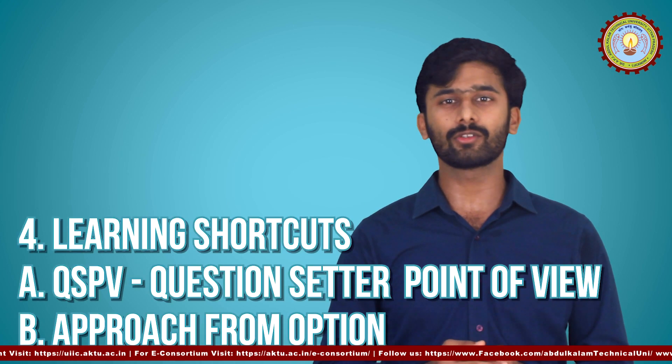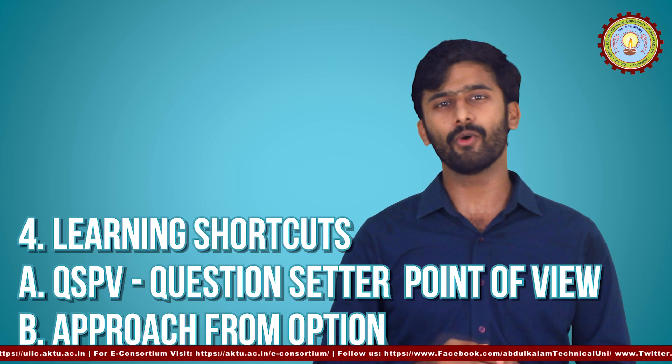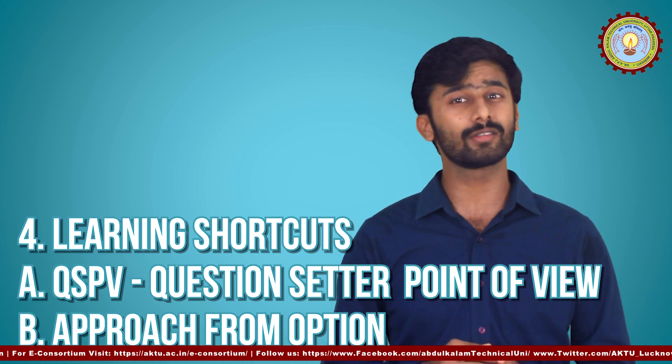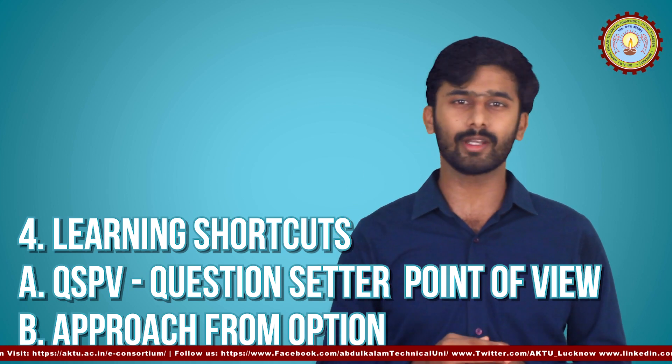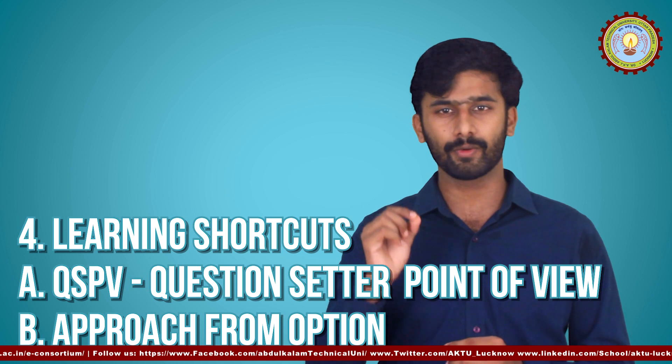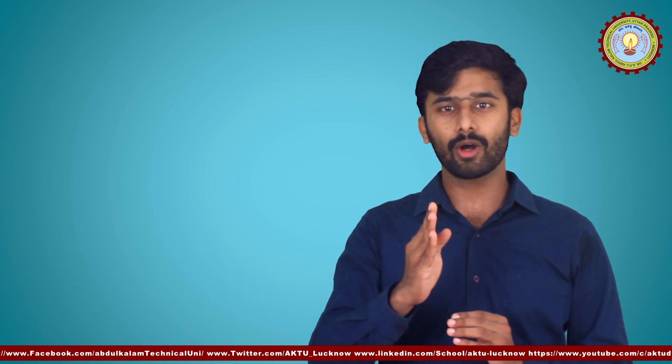The fourth one is learning shortcuts. Before this, you have to know about QSPV — the question setter's point of view. The person who sets a question does so by assuming an approach for the solution. If you are able to find the same approach, that is called a shortcut. You can also approach a problem from the options, which is another shortcut.